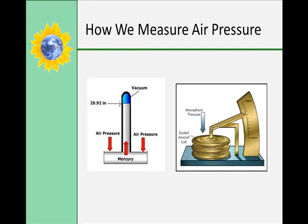The instrument we use to measure air pressure is called the barometer. There are two types: mercury and aneroid. Mercury barometers were invented in 1643 by Torricelli, who was a student of Galileo.